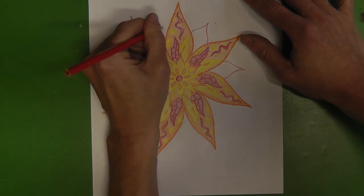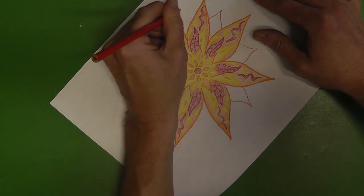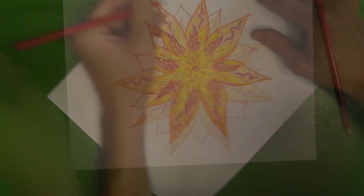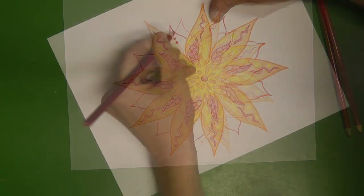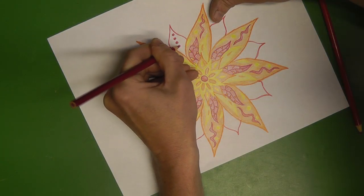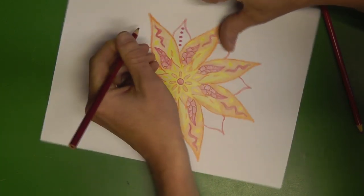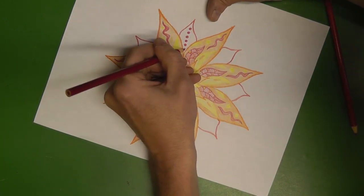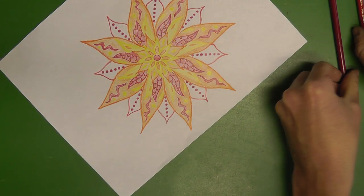Now I'm creating some smaller petal shapes between each of the orange petals, using red, using the darker color as the outline. And now I've just decided to create some circles and to fill those in, some dots on each of those newly created red petals.